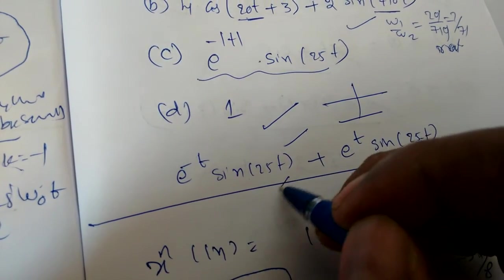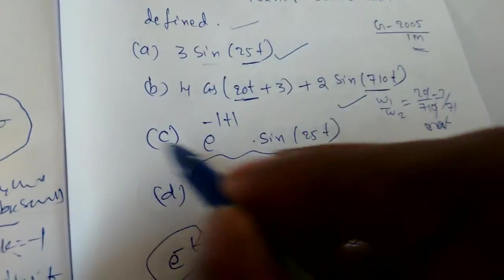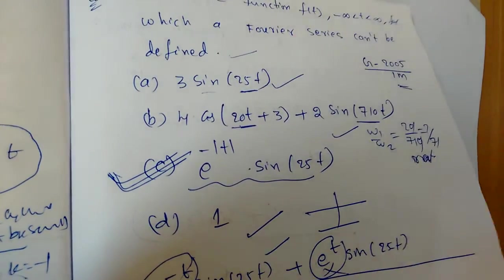So it is not periodic at all. One side is e power t, one side is e power minus t. So the option is c. Directly we can say option c. We cannot go back.